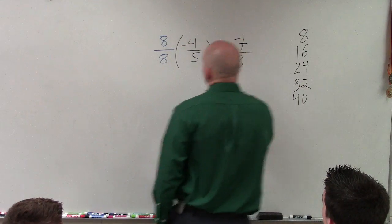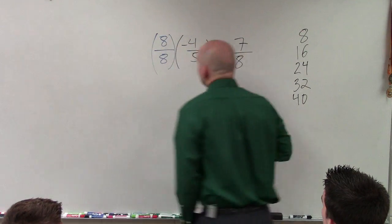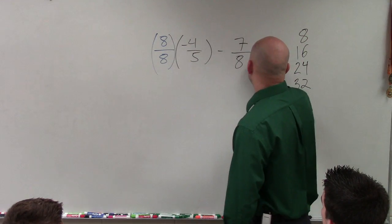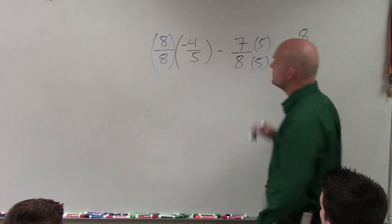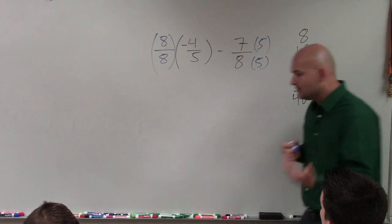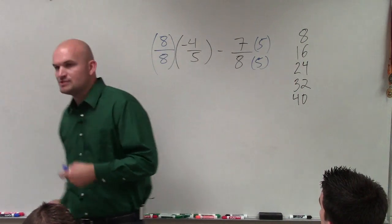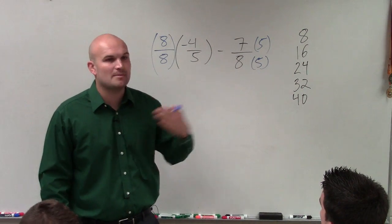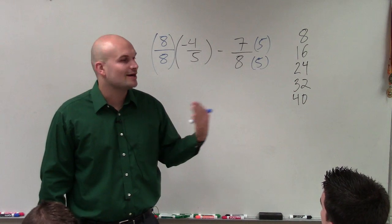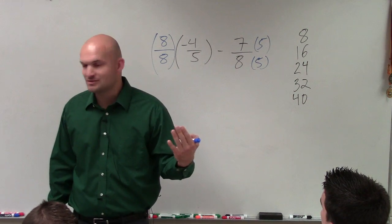Then over here, you multiply here by 8 over 8. To get 8 to 40, you have to multiply by 5 over 5. When you multiply fractions, you just multiply numerator times numerator, denominator times denominator. Please do not cross multiply when you're multiplying fractions. Cross multiplication has really nothing to do with the operation of the product for fractions.